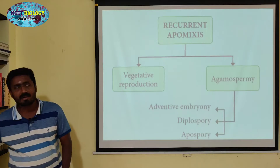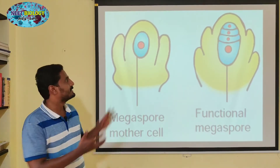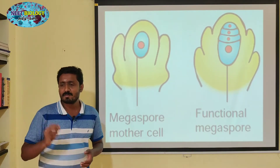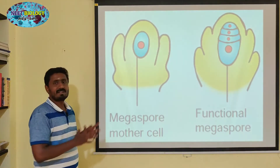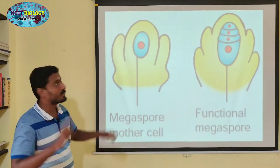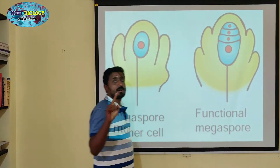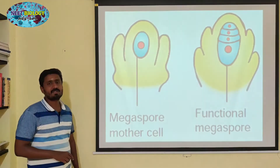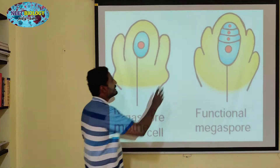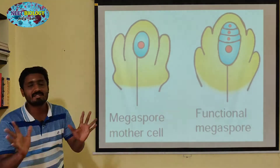What about apospory? Apospory involves a division process. This is a normal process of embryo-sac development — a Polygonum type of embryo-sac development. Look at diplospory: diplospory is the Antennaria type of embryo-sac development.